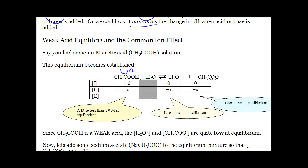A buffer system always exists between the weak acid and its conjugate weak base. So to make a buffer, you have to have approximately the same concentration of weak acid and weak base. To do that, you have to add its conjugate pair — you have to add its weak base. Because if you just let acetic acid ionize on its own, it's only going to ionize like 2%, which means 98% of this equilibrium will be the initial weak acid and 2% will be its conjugate base. We don't want that — we want equal parts acid and base.